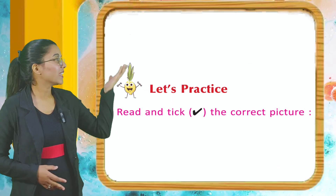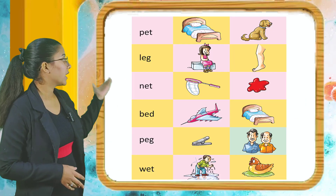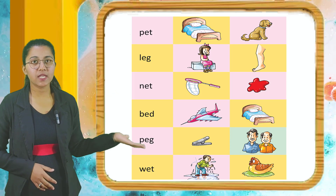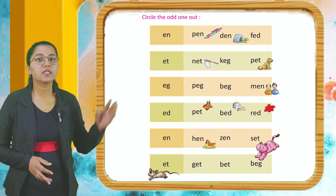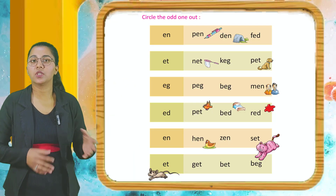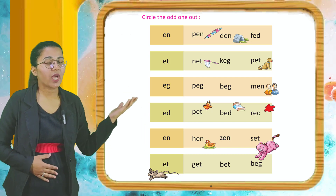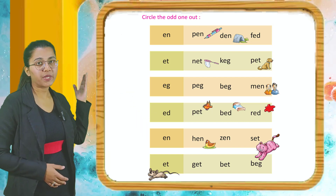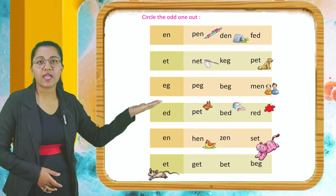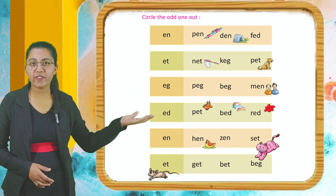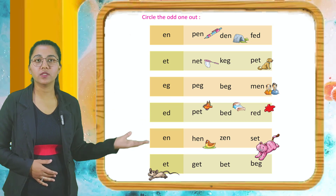Now students let's practice. Read and take the correct picture. Here are given some words and some pictures — you have to take the correct picture. Now circle the odd one out. Here are given some words and you have to circle the odd one out. For example, given EN — there is pen and there is den, then there is fed. So fed is the odd one out; you have to circle fed. This is how you do this question.